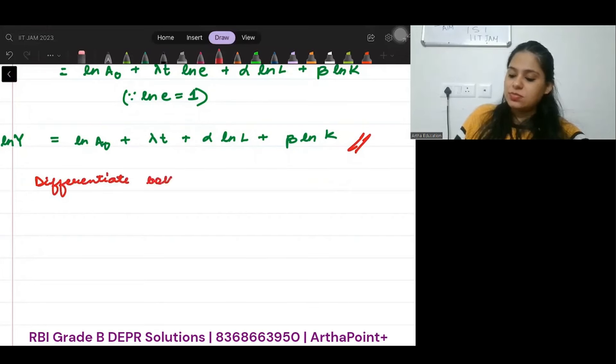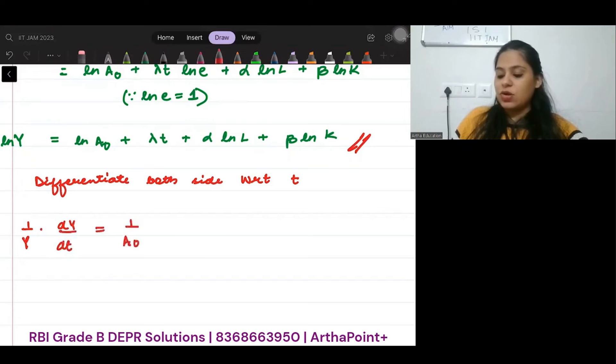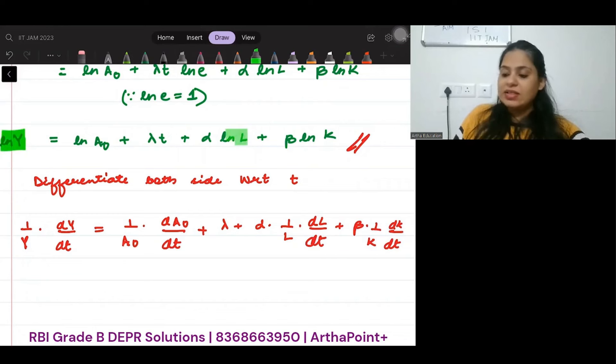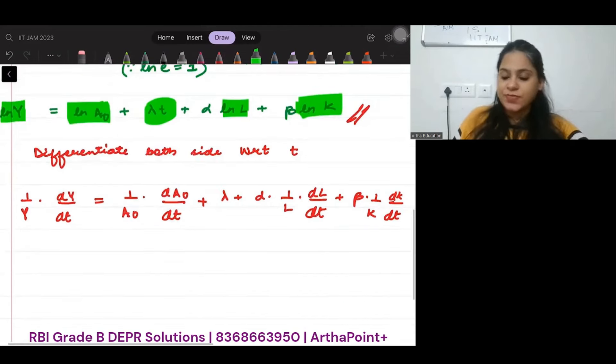Differentiate both sides with respect to t. So logarithmic differentiation, total differentiation. Logarithmic differentiation is 1/y dy/dt is equal to 1/A0 dA0/dt plus λ plus α 1/L dL/dt plus β 1/K dK/dt. Where ln Y was 1/y, ln L was 1/L, λt differentiation is just λ, ln K was 1/K dK/dt, ln A0 was 1/A0 dA0/dt.